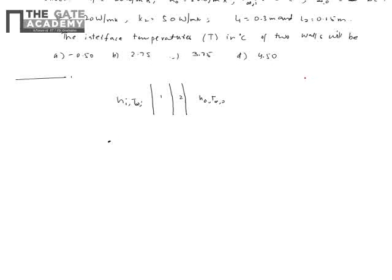Whenever you have heat conduction through a plane wall, it is written as k·ΔT/l. For a single wall of length l and cross-sectional area A, ΔT is the temperature difference across it. In steady state, we write Q = ΔT / R, where R = l/(k·A) is the conduction resistance — higher R means less heat transfer for a given ΔT.